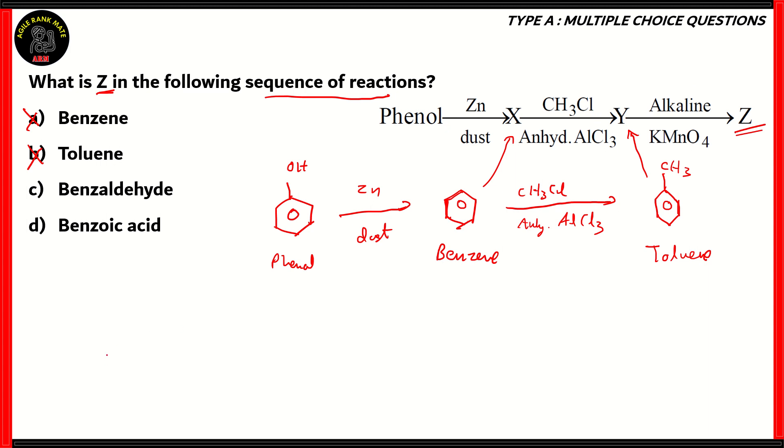Now we have toluene here, and it reacts with alkaline potassium permanganate, and it forms Z. Note here that alkaline KMnO4 is a very powerful oxidizing agent. Therefore, a carboxyl group is added, replacing the methyl.